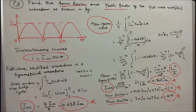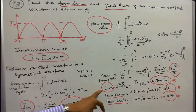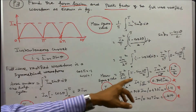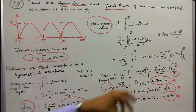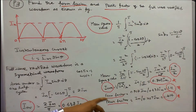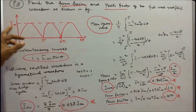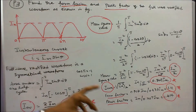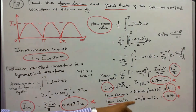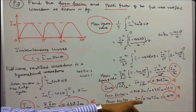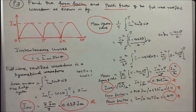With I_average = 0.637 I_m and I_rms = 0.707 I_m, form factor = I_rms / I_average = 0.707 / 0.637 = 1.11. Peak factor = I_m / I_rms = I_m / (0.707 I_m) = 1.414.